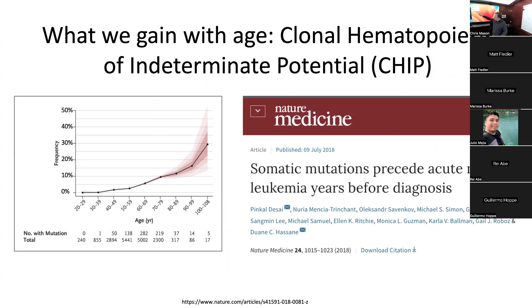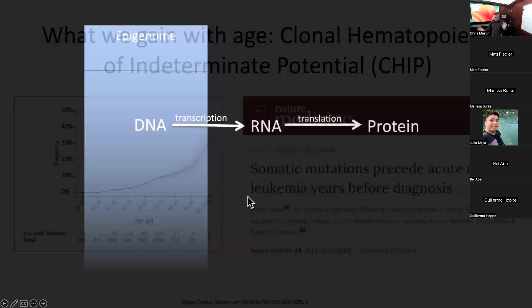How could we use this to predict your risk for cardiovascular disease or leukemia? One paper suggests that maybe 15 to 16 years before you get leukemia, they could see that you're on your way. You have to sequence very deep to see it, but this is something that changes as you age — at the genetic level, a backdrop to everything else we'll discuss.